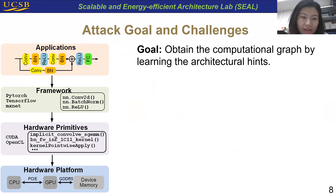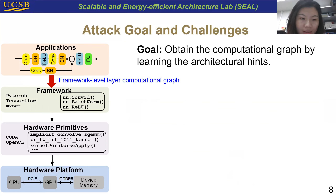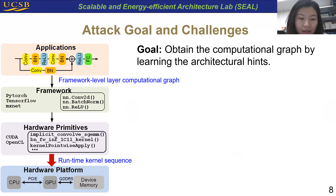Let us look at the system stack of the DNN system. It consists of the algorithm, deep learning framework, hardware primitives, and hardware platform. The computational graph of the model is transformed to a runtime layer sequence and then transformed to a runtime kernel sequence. Finally, the kernels are executed on the hardware platform and the adversary can monitor the architecture hints.